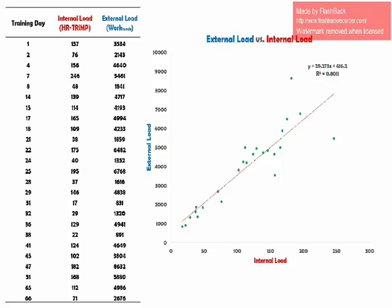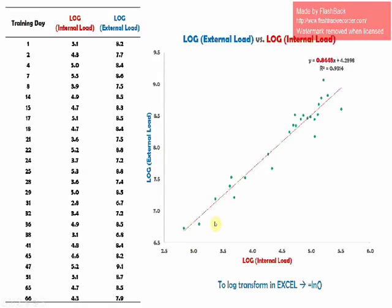To do this, we just need to take our two variables and log transform them. It's really easy in Excel — you can just take the natural log (LN) of both the internal and the external load, and you end up with both values on the same scale. Now we see the relationship between these log-transformed variables has improved, which is great. But also we get this exponent value — the slope of this line — which is really important because it forms the exponent in our Training Efficiency Index calculation.